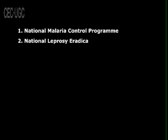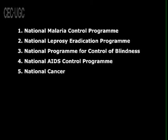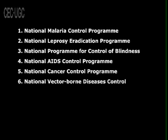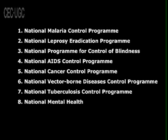Some of the programmes formulated by the Department of Health include: number one, National Malaria Control Programme; number two, National Leprosy Eradication Programme; number three, National Programme for Control of Blindness; number four, National Iodine Deficiency Disorders Control Programme; number five, National Cancer Control Programme; number six, National Vector Borne Diseases Control Programme; number seven, National Tuberculosis Control Programme; number eight, National Mental Health Programme; and number nine, Universal Immunisation Programme.